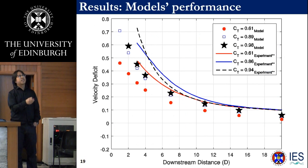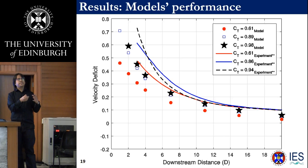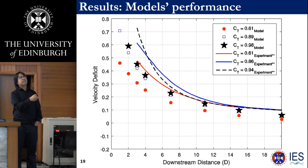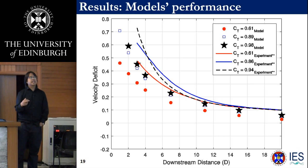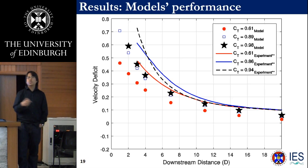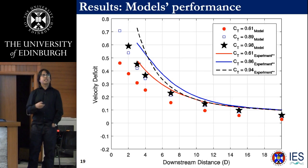Looking at the centerline velocity deficit, the solid line shows the experimental data and the dotted lines show the numerical output. It is encouraging that the models managed to give the appropriate trend — the progression from higher thrust to lower thrust follows the experimental trend. However, the models give a slightly underestimated value of the velocity deficit, which we consider acceptable because the K value used in the numerical domain was only an approximation, not the exact value used in the experimental setup.